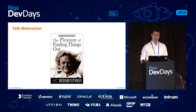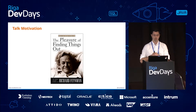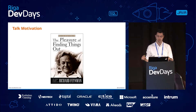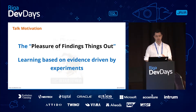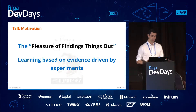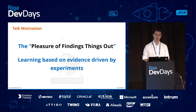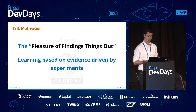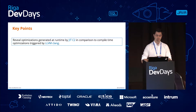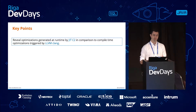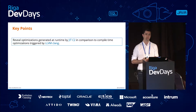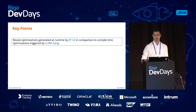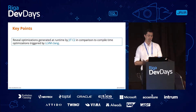What was my motivation to drive such an experiment or research? I'm a big fan of Richard Feynman. He wrote a book called 'The Pleasure of Finding Things Out,' and this was one of my drivers. The key points out of this presentation are to reveal the optimizations triggered from different compilers' perspectives — one at runtime, JIT C2 from Hotspot, and the other on the C++ side, LLVM Clang.